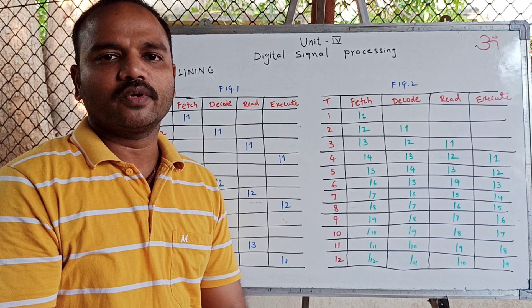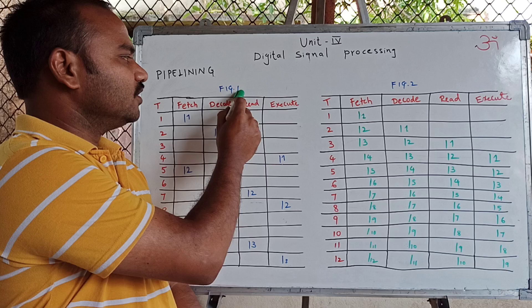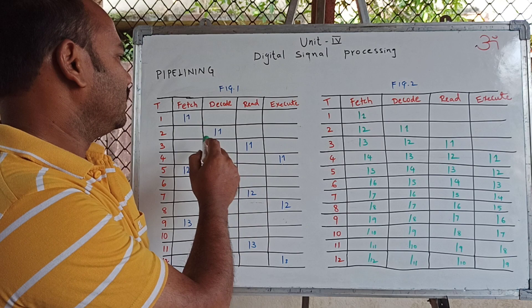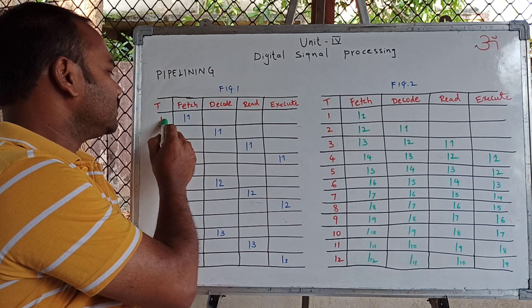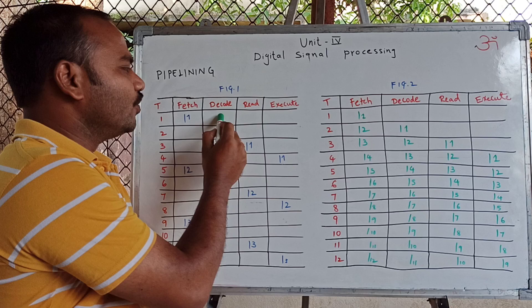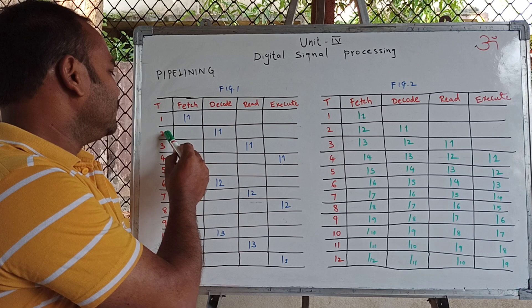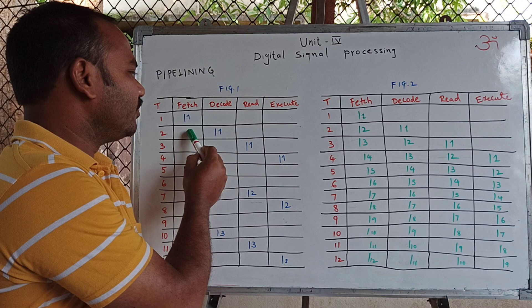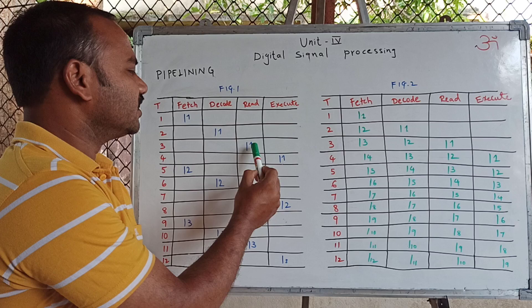Now I will explain you about a processor which is non-pipeline. Figure 1 shows the instruction cycle of a non-pipeline processor. Here, the first column represents time. In the first clock pulse, only instruction L1 is fetched. During this time, the decode unit, read unit, and execute unit — these three are idle. In the second clock cycle, instruction L1 enters the decode phase. During this time, fetch, read, and execute are idle.